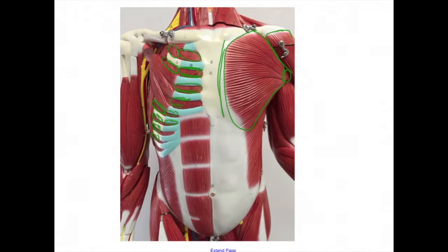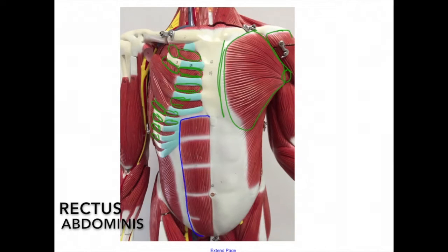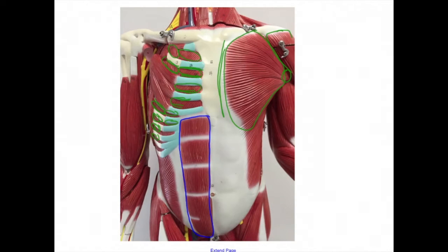We will now look at the abdominal muscles. Here is the rectus abdominis. The origin is the pubic bone. The insertion is the xiphoid process and costal cartilages of ribs six, seven, and eight. The action is to compress the abdominal viscera and flex the vertebral column.